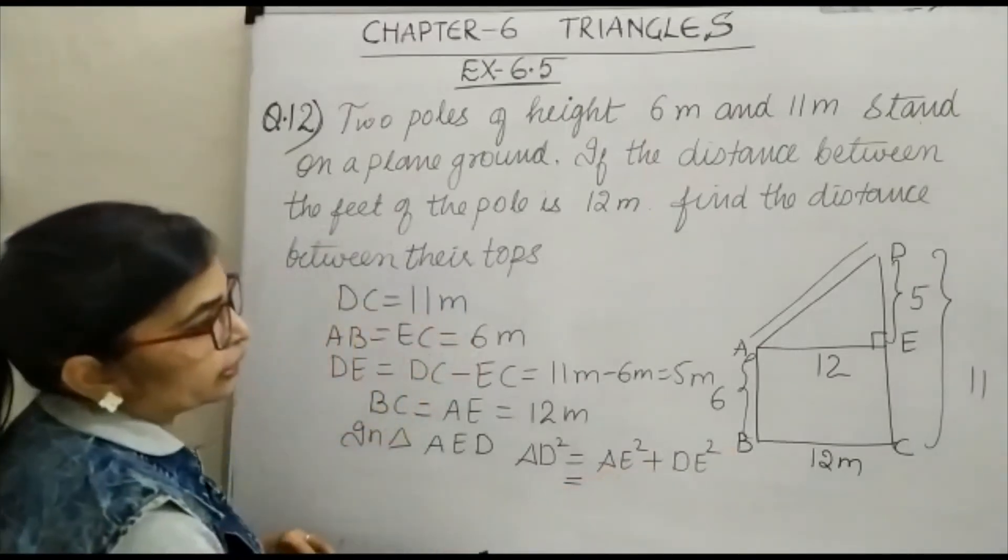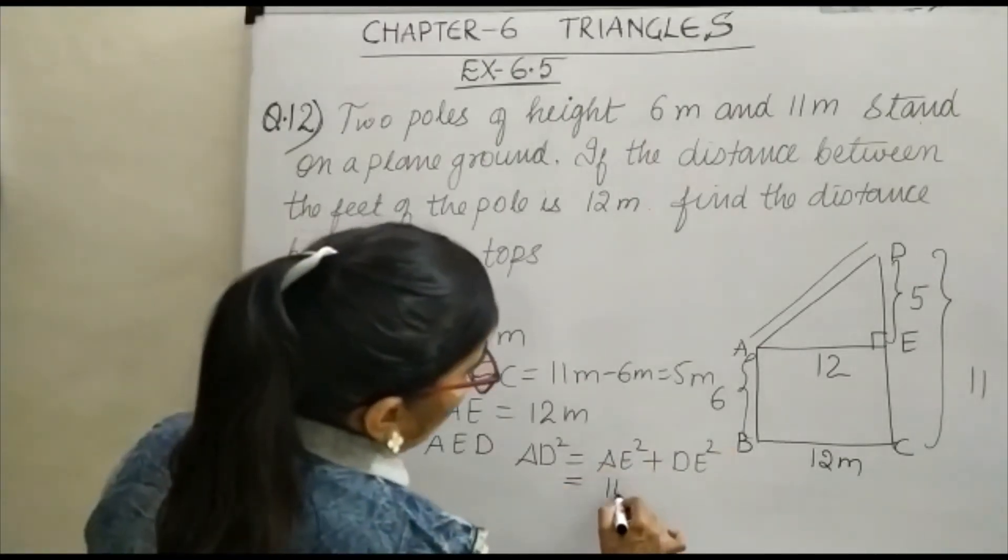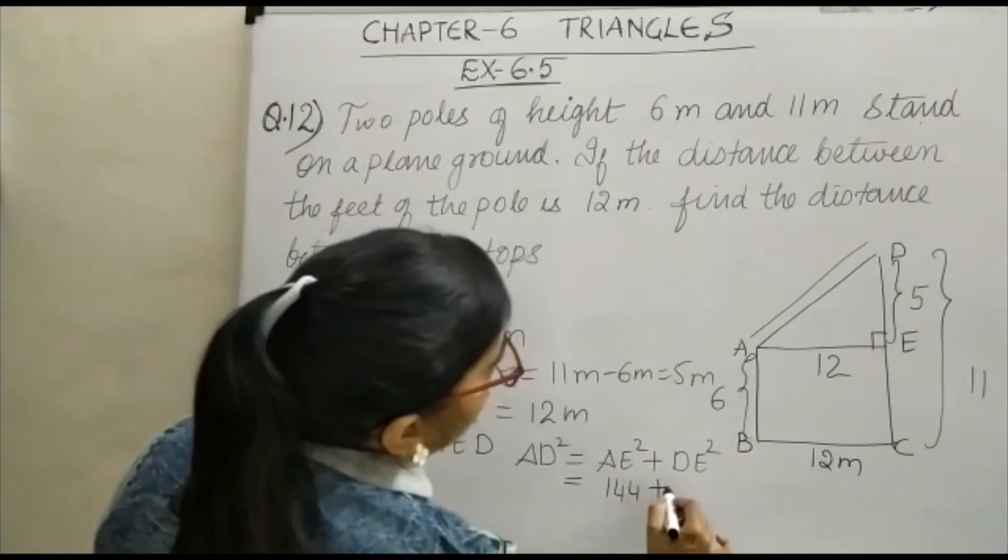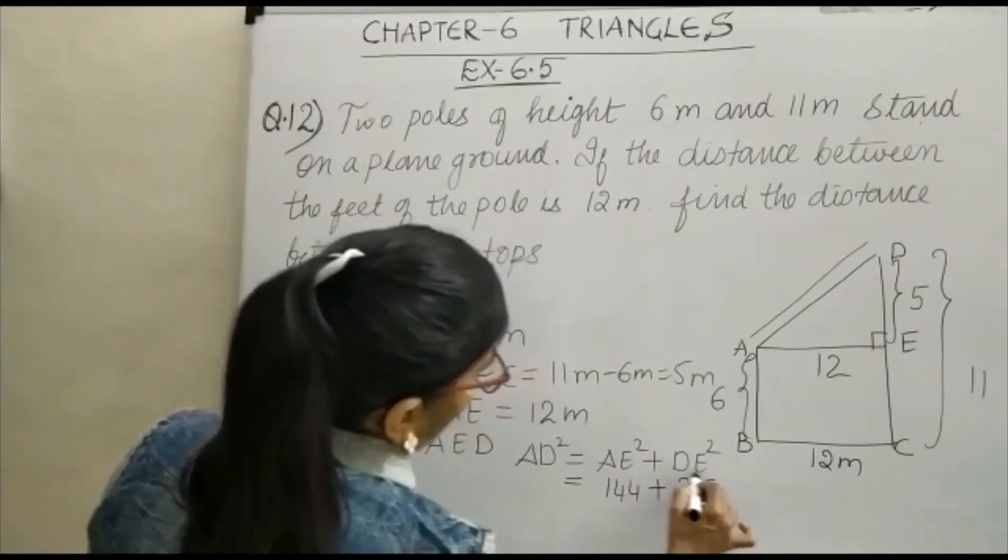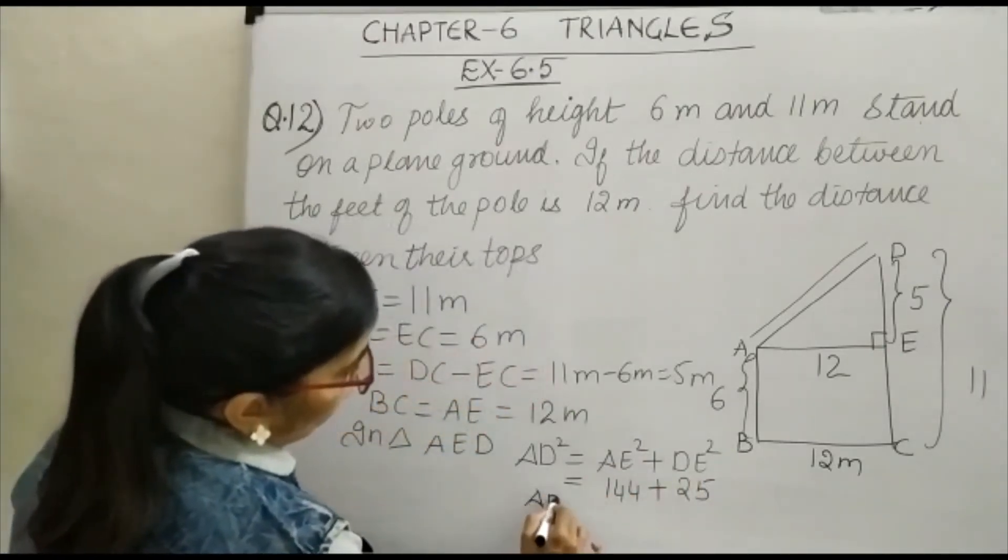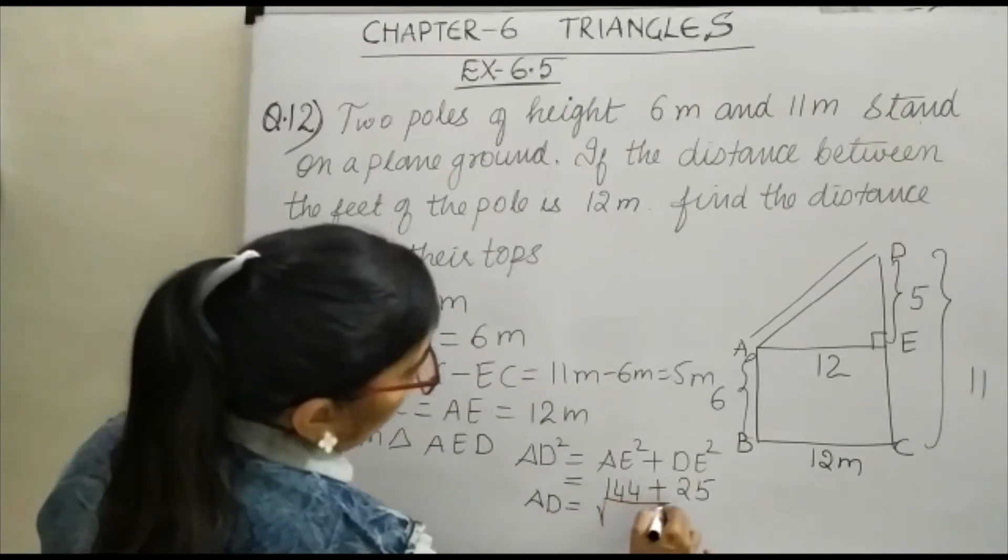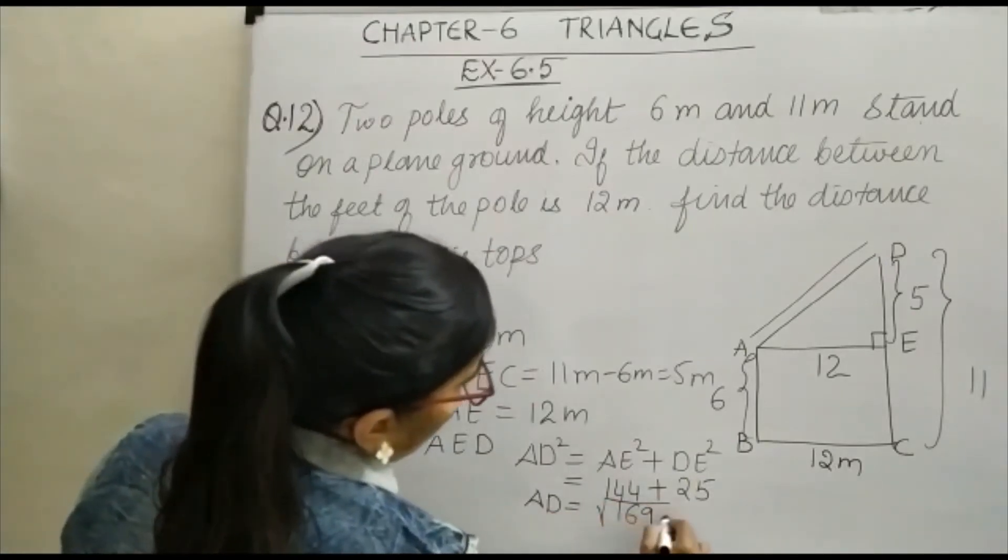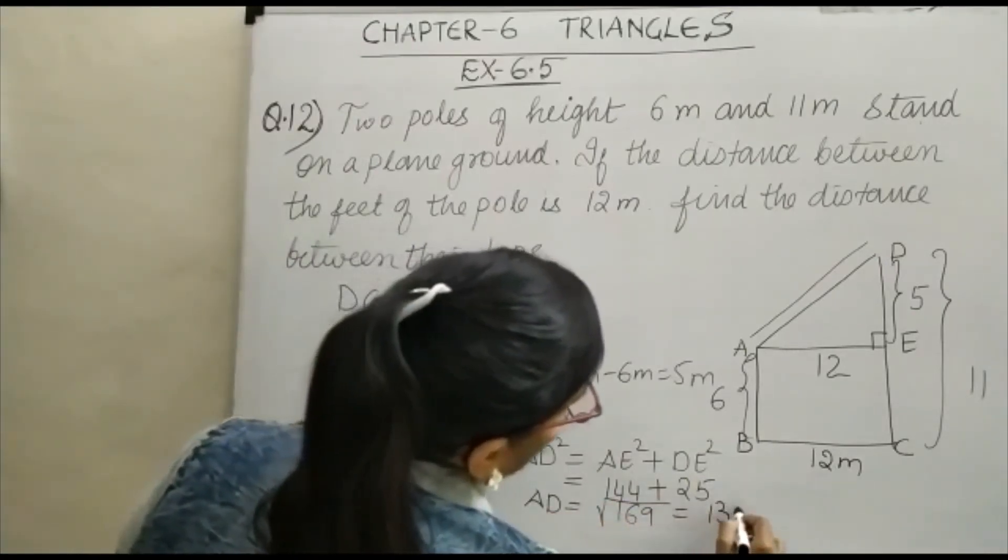So what is your AE? That is 12, that is 144, plus DE that is 25. Your AD will be equal to under root of 169 and that is equal to 13 meter.